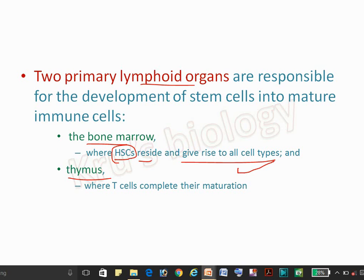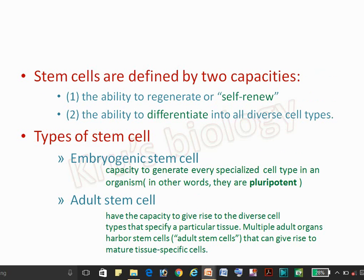In the thymus, T cells complete their maturation. Remember: the bone marrow is the site where all blood cells are given rise to, but maturation of T cells occurs in the thymus. Production of T cells begins in the bone marrow, and these lymphoid organs are responsible for the development of stem cells into mature immune cells.